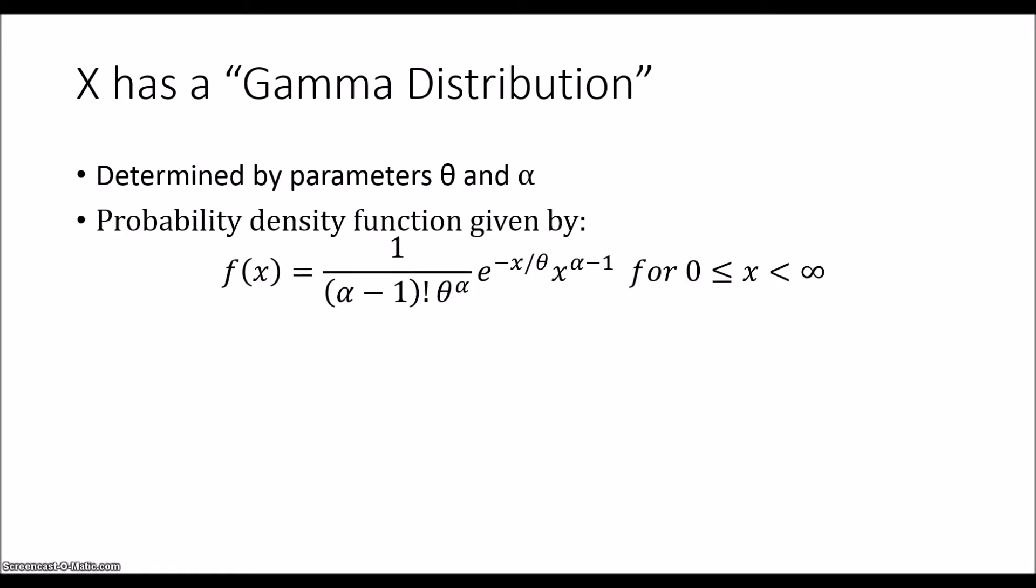And the probability density function for the gamma distribution is given by f(x) = 1 over (α-1)! times θ^α multiplied by e^(-x/θ) times x^(α-1) for values of x that are greater than or equal to 0. So we've got another continuous probability distribution here.